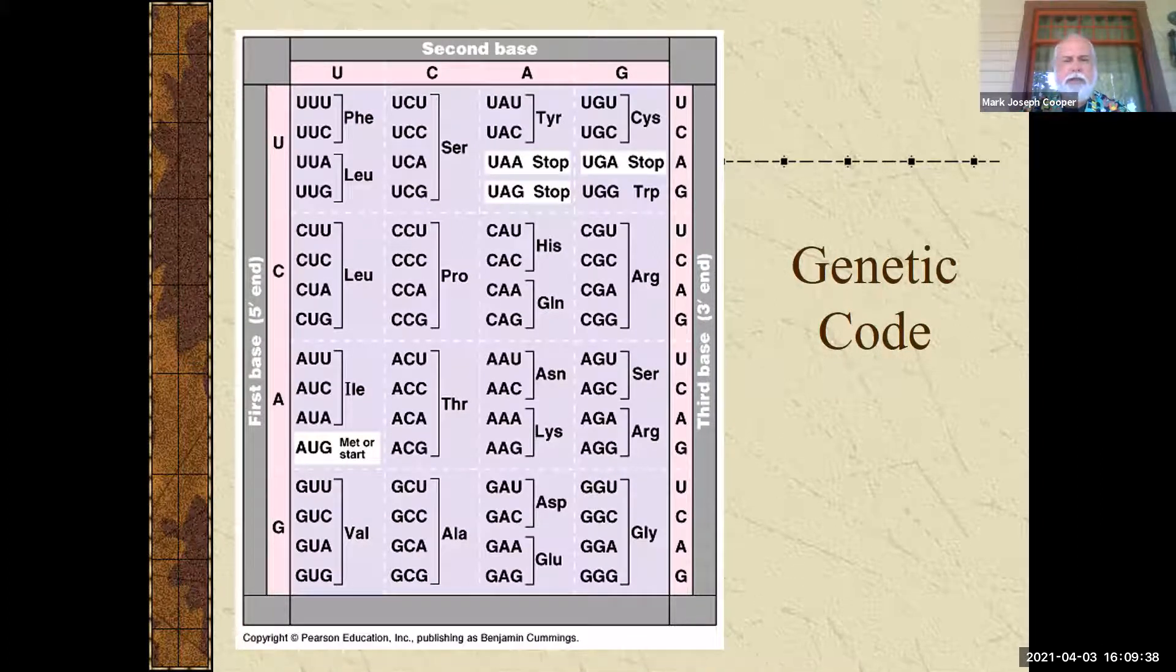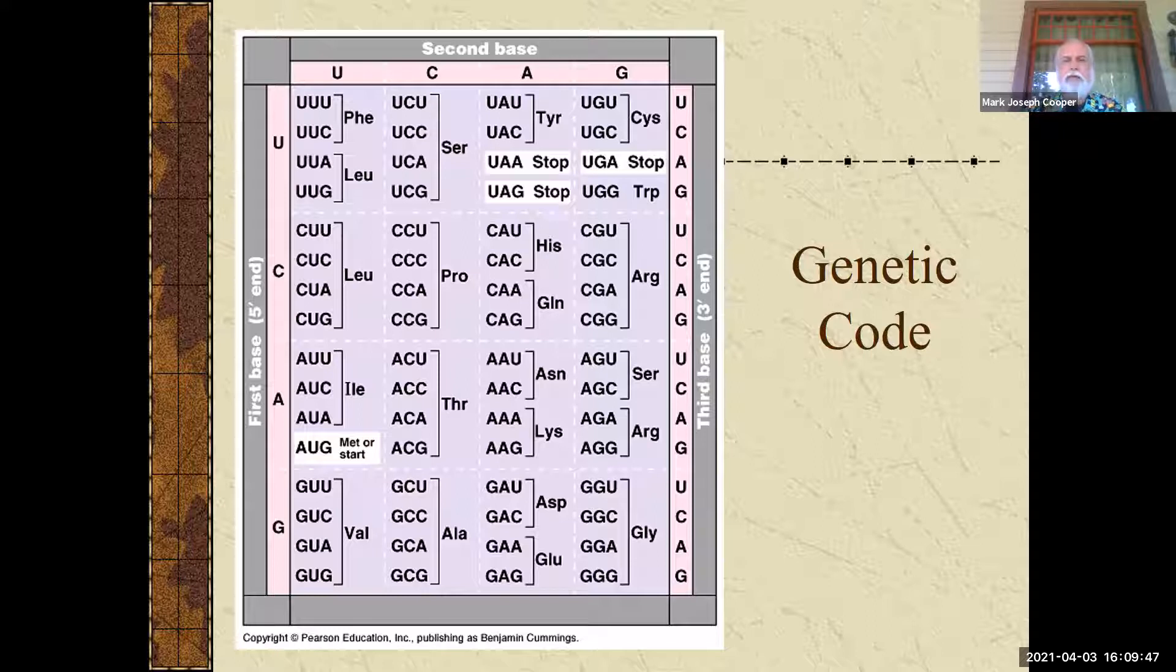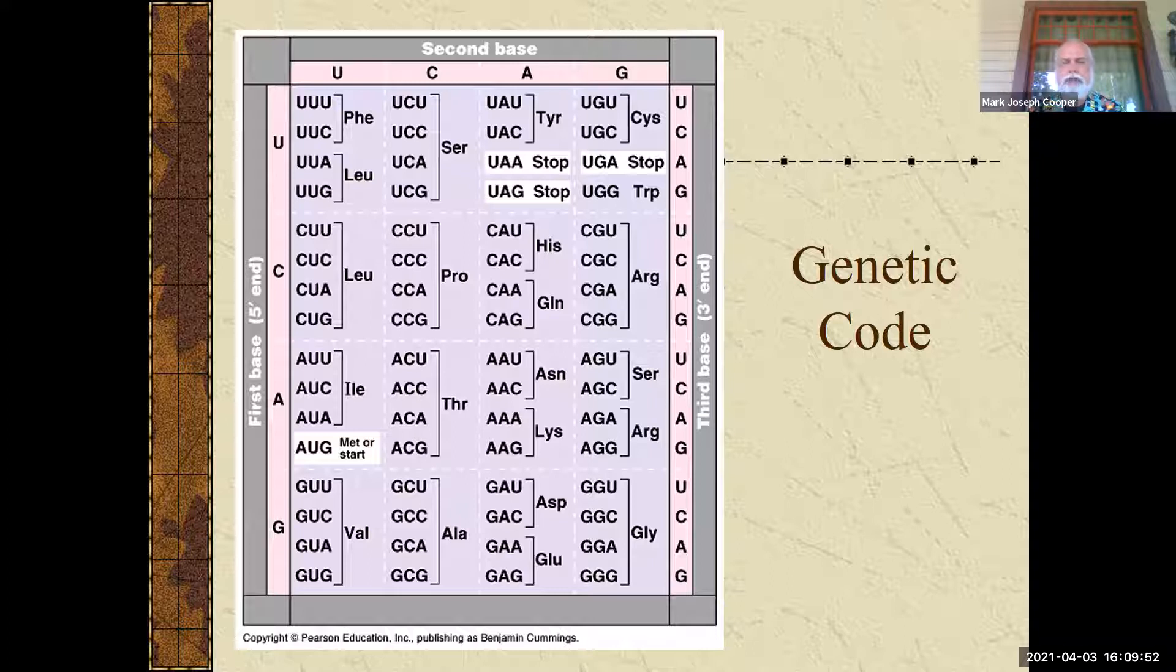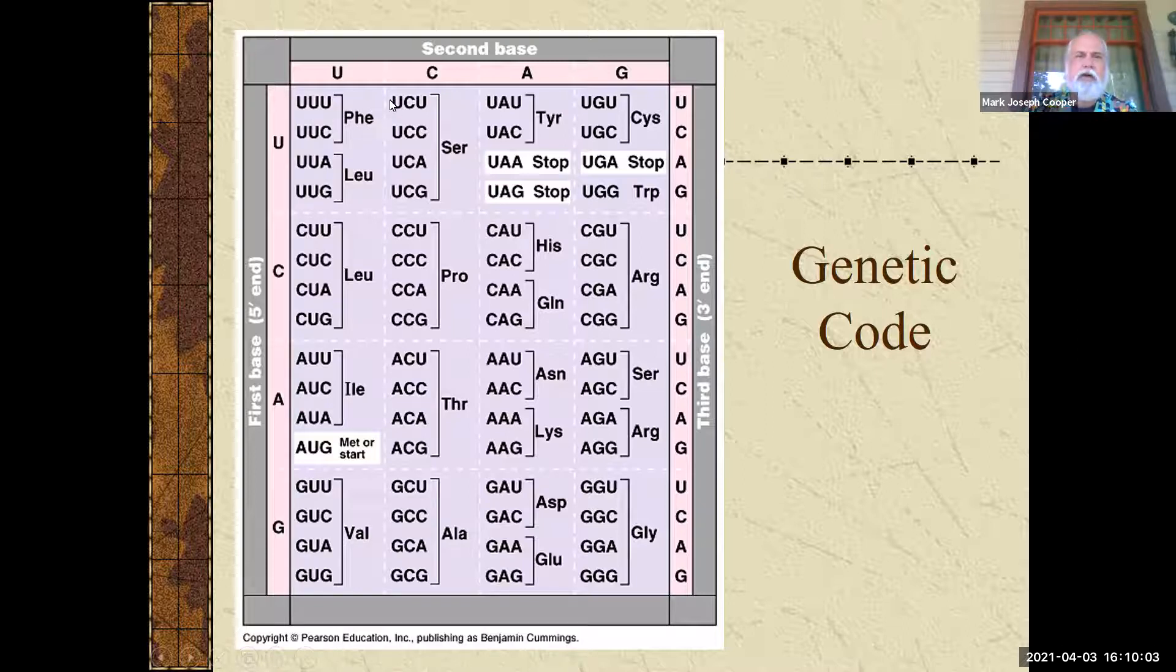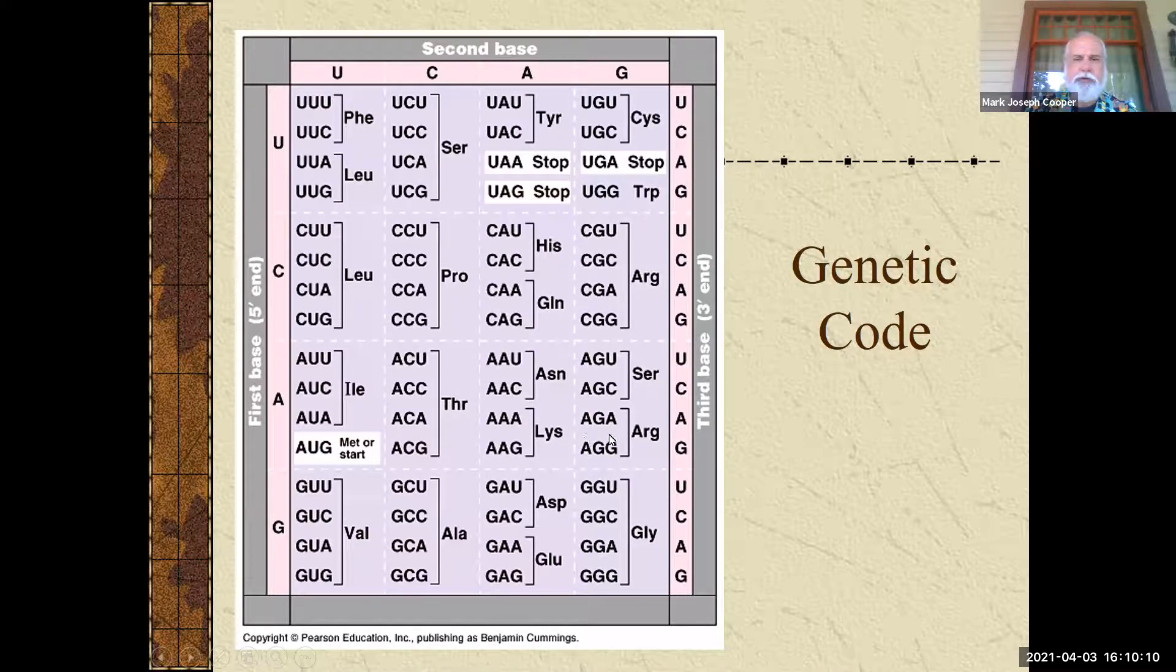Alright, and this is the magical messenger RNA coding for particular amino acids. So this table, I need you to kind of know. Let me explain that. I need you to know that this messenger RNA UUU will actually code for phenylalanine. Now, here's what you need to know: don't memorize this. I don't know it, and I don't need you to know it.